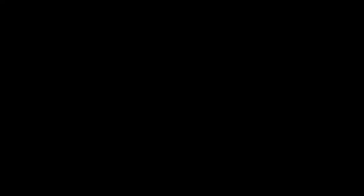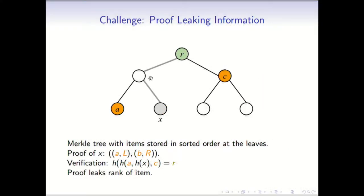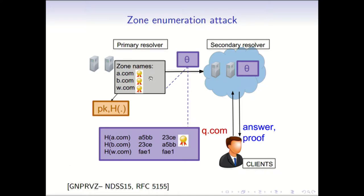In the Merkle hash tree, the proof of an element X belonging to the set is the sibling path — the orange nodes along with the root. This proof reveals the rank of the element in the database and also reveals the number of elements from the height of the tree. Should we care about this kind of leakage? The answer is yes, because serious practical attacks have been demonstrated in this scenario.